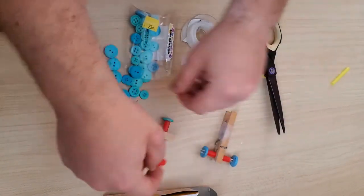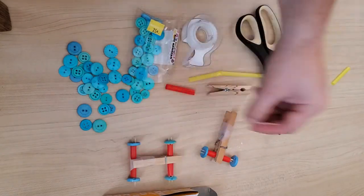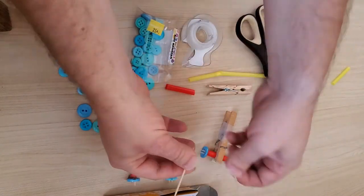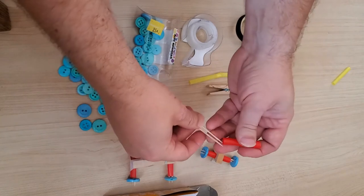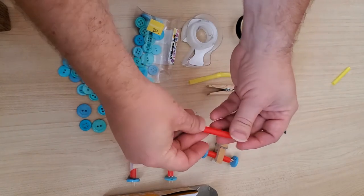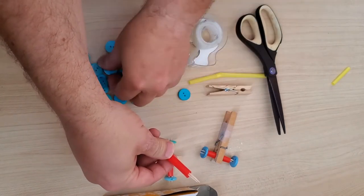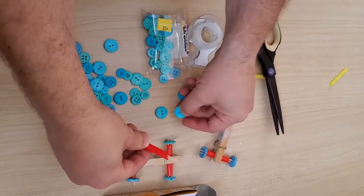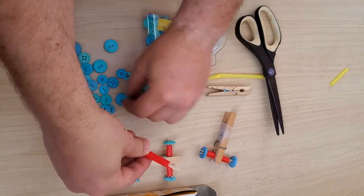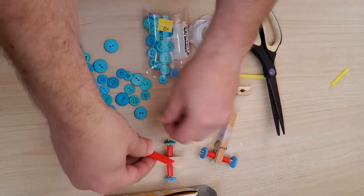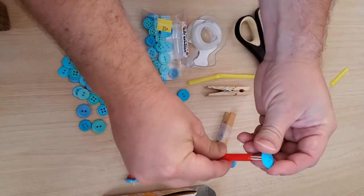Now we're going to take this other straw. I need to get two toothpicks. Slip it through. And then put two wheels on. And those don't quite match. So let's see if we can find some that do. Here we go. Nice. We've got the same pattern.